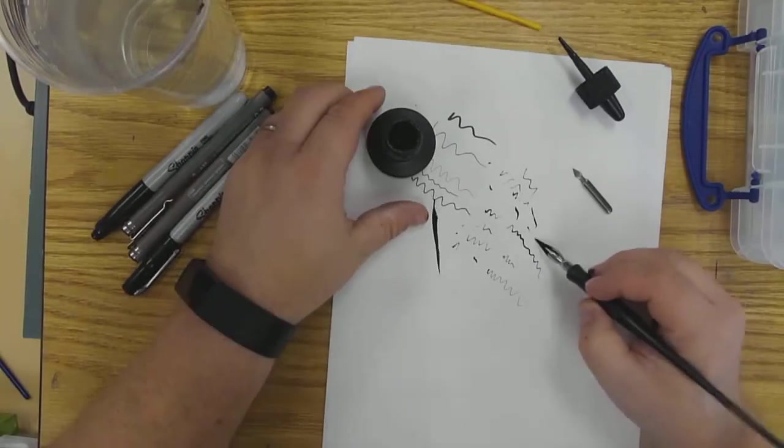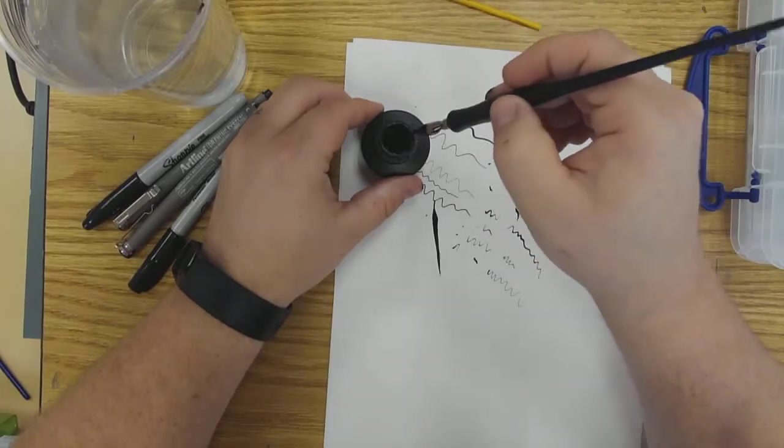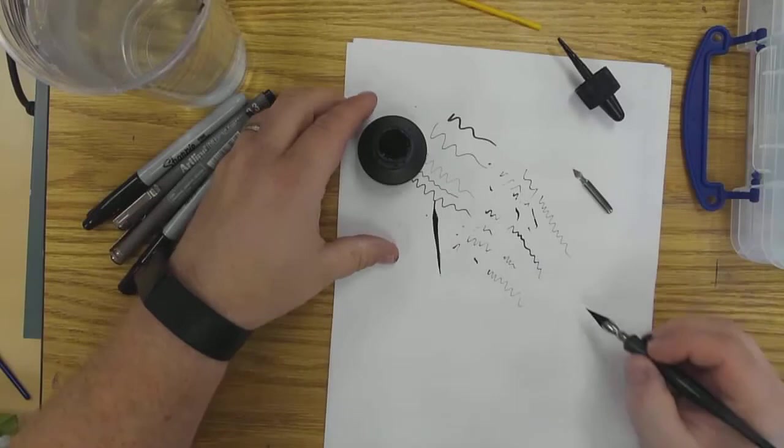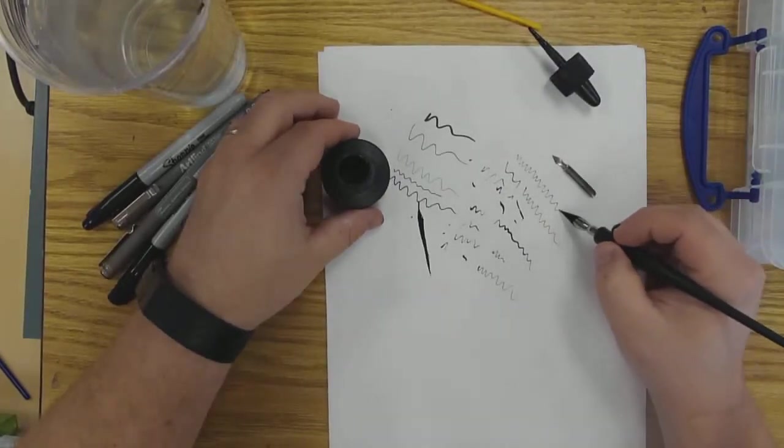There you go. So as you dip it in the ink, then you can draw with it. And you can see with a really light touch, you can get this super fine, beautiful little line.